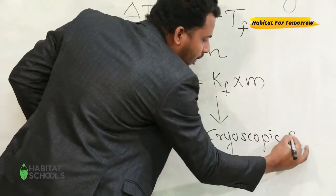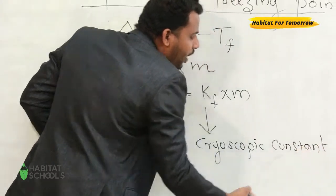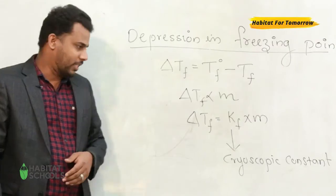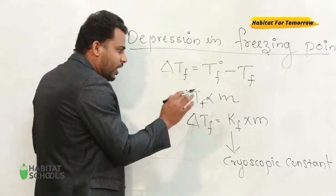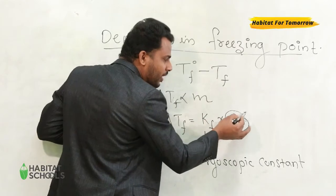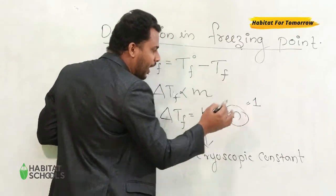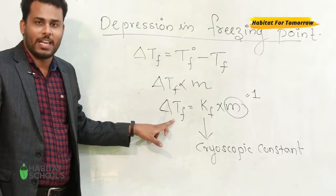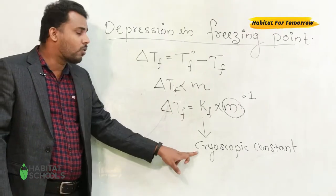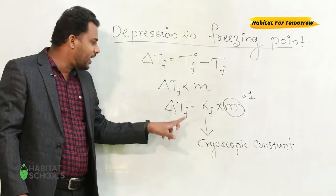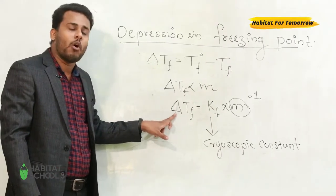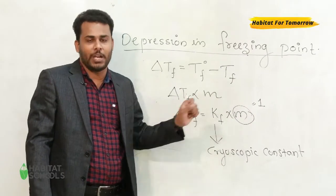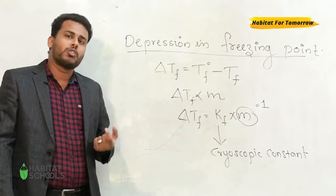Cryoscopic constant, or it is also termed as molar depression constant. Just imagine, if the concentration of the solution, that is molality, is unity, then Kf is equal to ΔTf. So the cryoscopic constant is defined as the depression in freezing point when the concentration of the solution is unity.